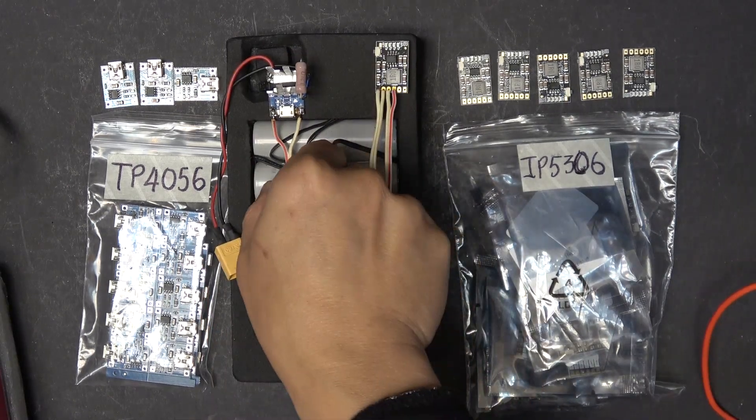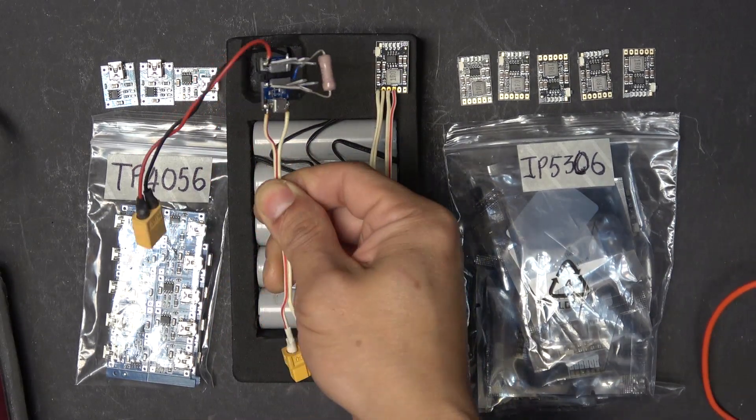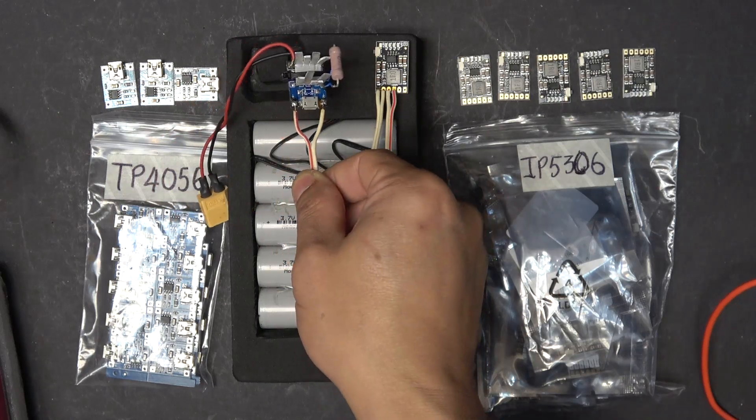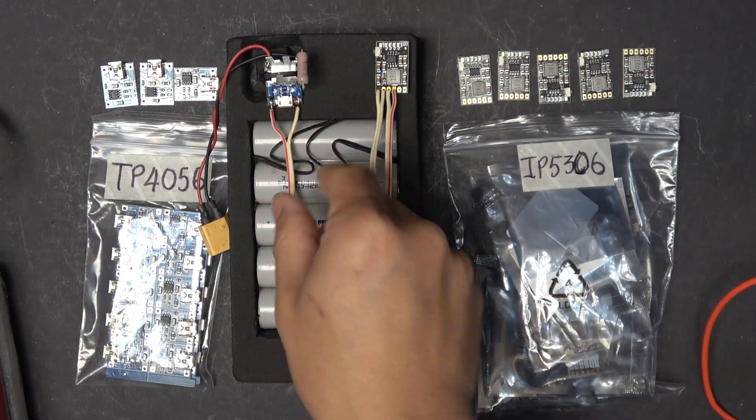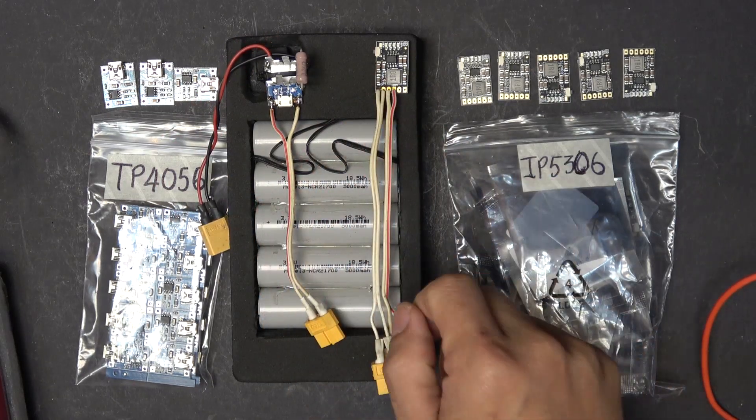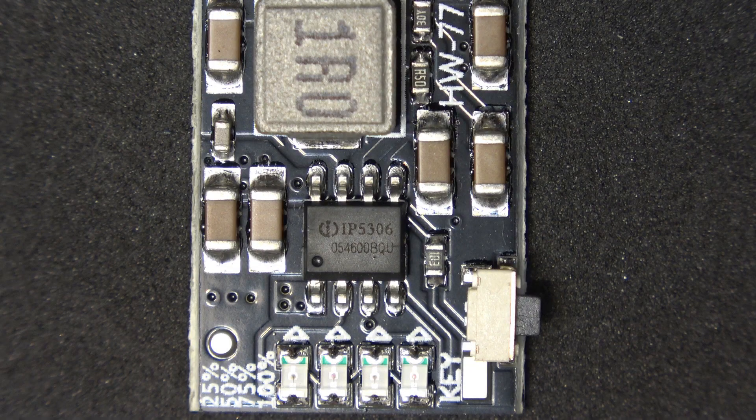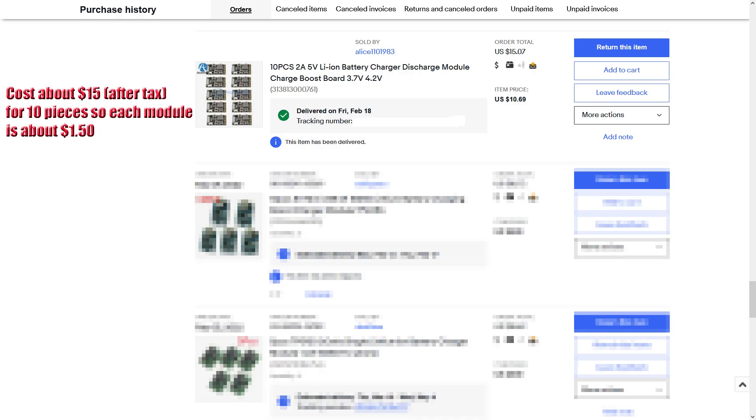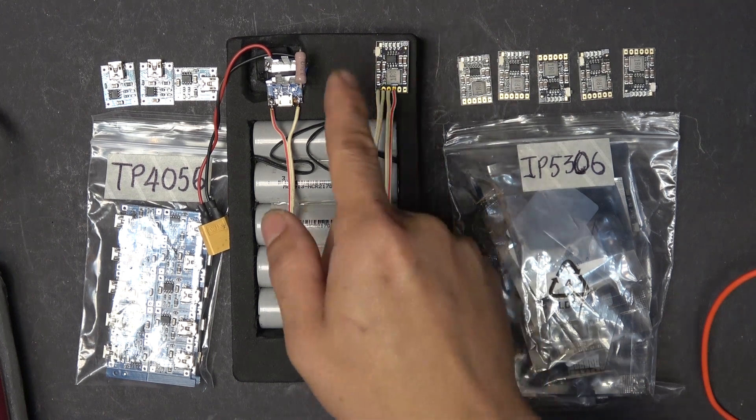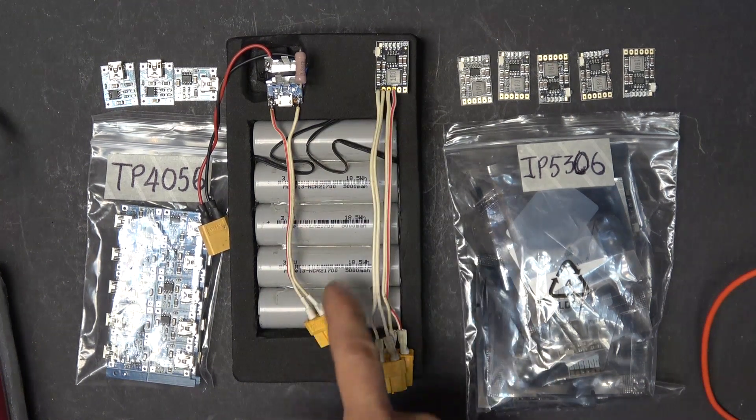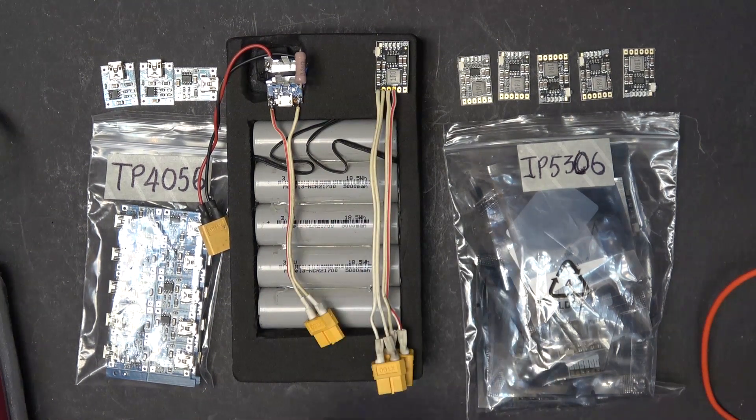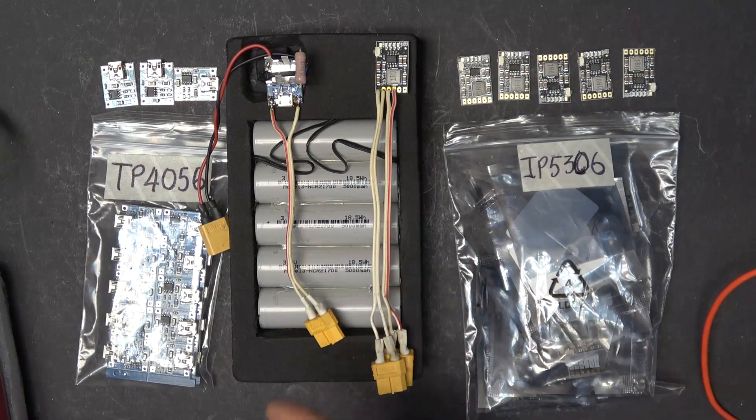I also made a 2 amp charging board from a hacked TP4056, which can do 2 amps. This IP5306 board can also do 2 amps. But even at 2 amp charging rate, to charge the 25 amp hour battery, it would take over 12 hours to fully charge this battery. That's still a very long time.